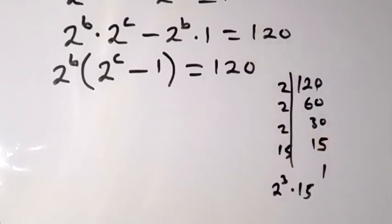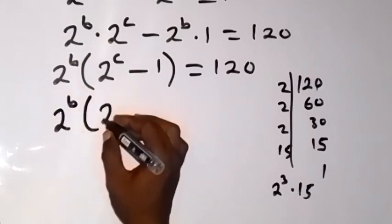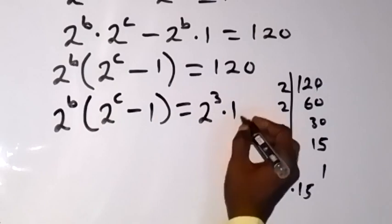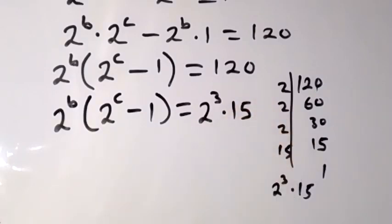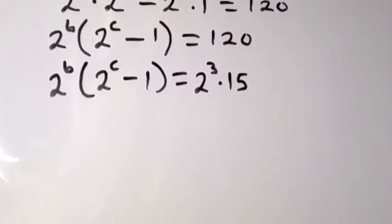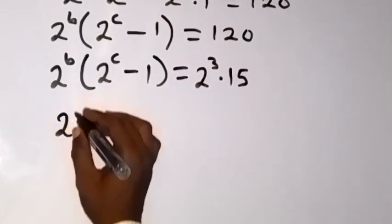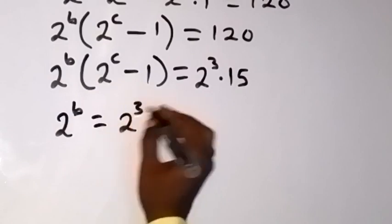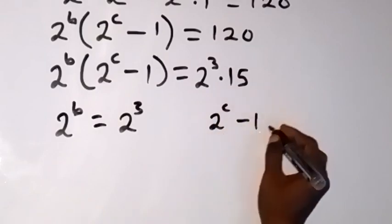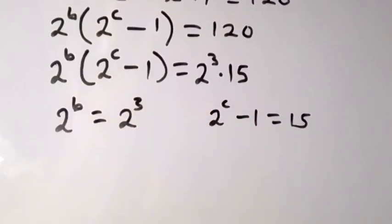From there we can rewrite the equation as 2 raised to power b multiplied by 2 raised to power c minus 1, equals 2 raised to power 3 times 15. We can now equate the components respectively: 2 raised to power b equals 2 raised to power 3, and 2 raised to power c minus 1 equals 15.